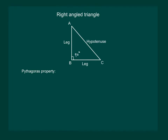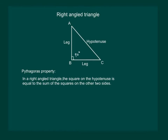Right angle triangles have a very important property called the Pythagorean property, which states that in a right angle triangle, the square on the hypotenuse is equal to the sum of the squares on the other two sides.